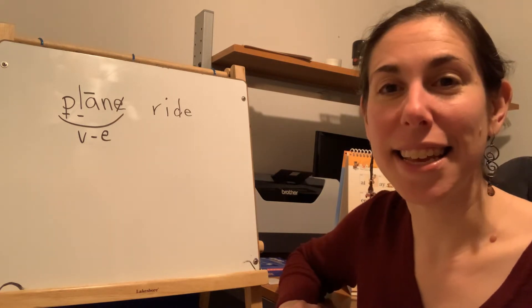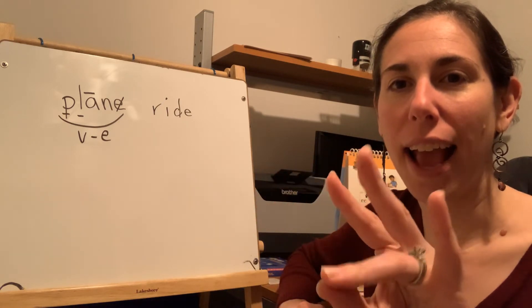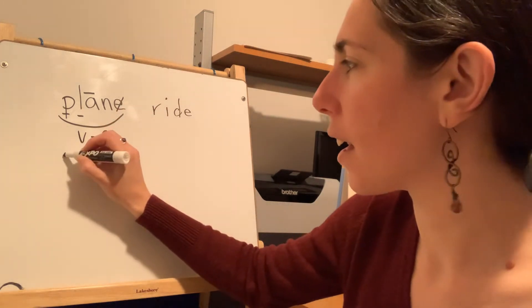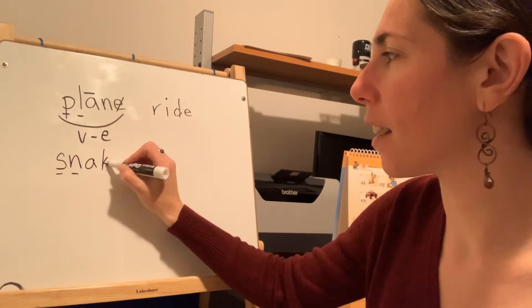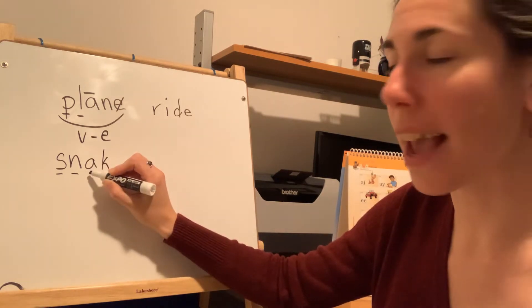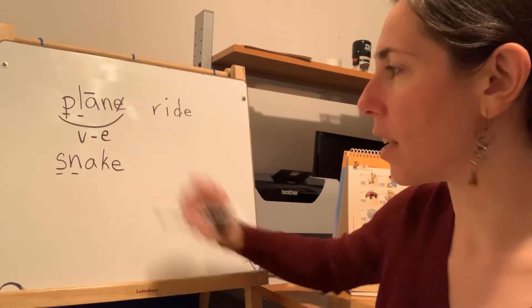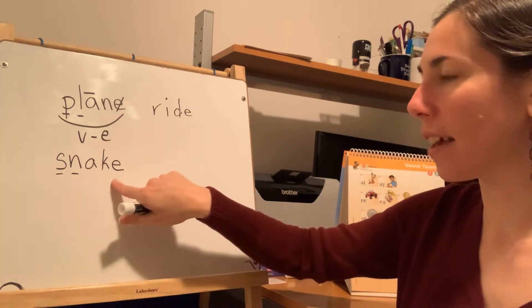Snake. Say snake. Tap snake. S-N-A-K-E. Snake. There's a blend at the beginning. A-K-E. We're hearing the long vowel, we put the E there. Good. Excellent.